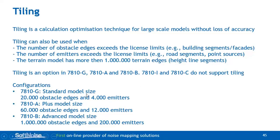Looking at the G configuration: the standard model size supports 20,000 obstacle edges and 4,000 emitters. So if a building has 4 facades, you can have 5,000 buildings for calculation. In every Predictor configuration you can create an unlimited number of buildings — the limitation is only when you start a calculation. An emitter is either a point source, a road segment, or a railway segment. The plus size has 60,000 obstacle edges and 12,000 emitters. The advanced model size has 1,000,000 obstacle edges and 200,000 emitters.